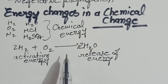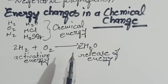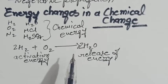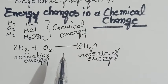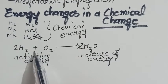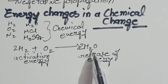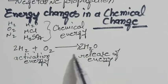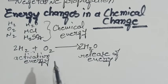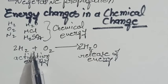A chemical change is basically associated with absorption or release of energy, which is required to form different kinds of bonds between reactants and products. This energy can be in the form of heat, sound, or electricity. If the energy of the product is less than the reactants, then the surplus energy is released.